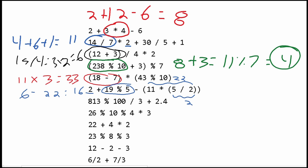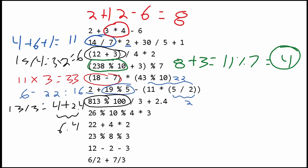Next, we have 813 modulus 100, and the remainder is 13. We divide this by 3, giving us 4. Then we add 2.4, so this gives us 6.4 as our answer.